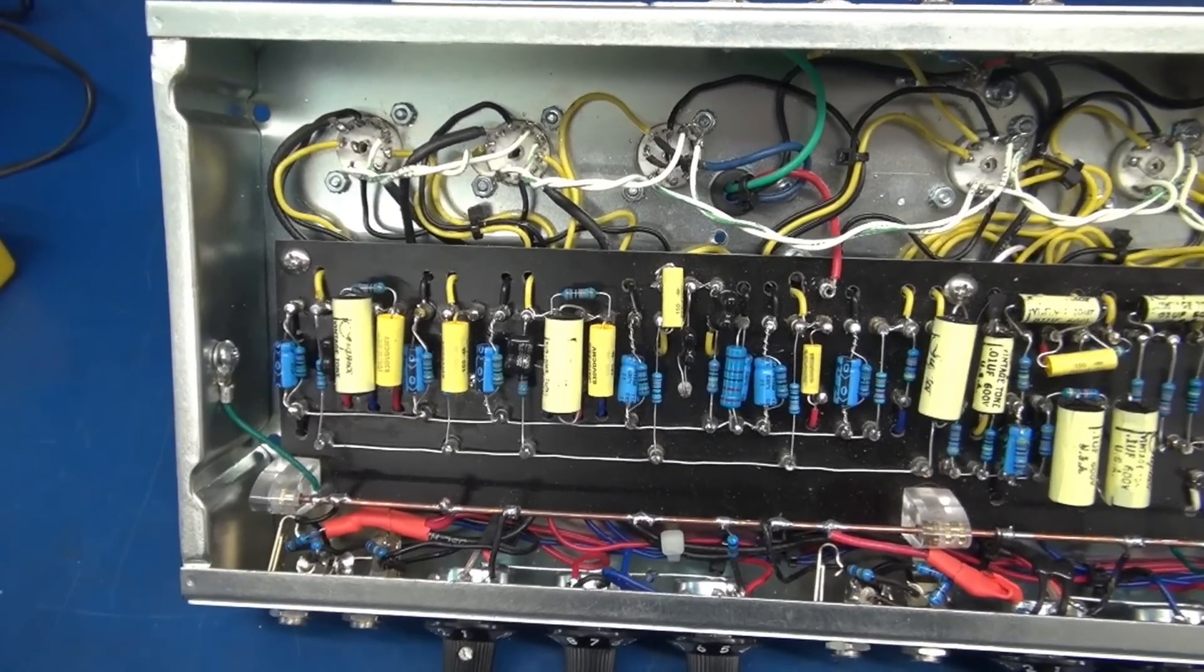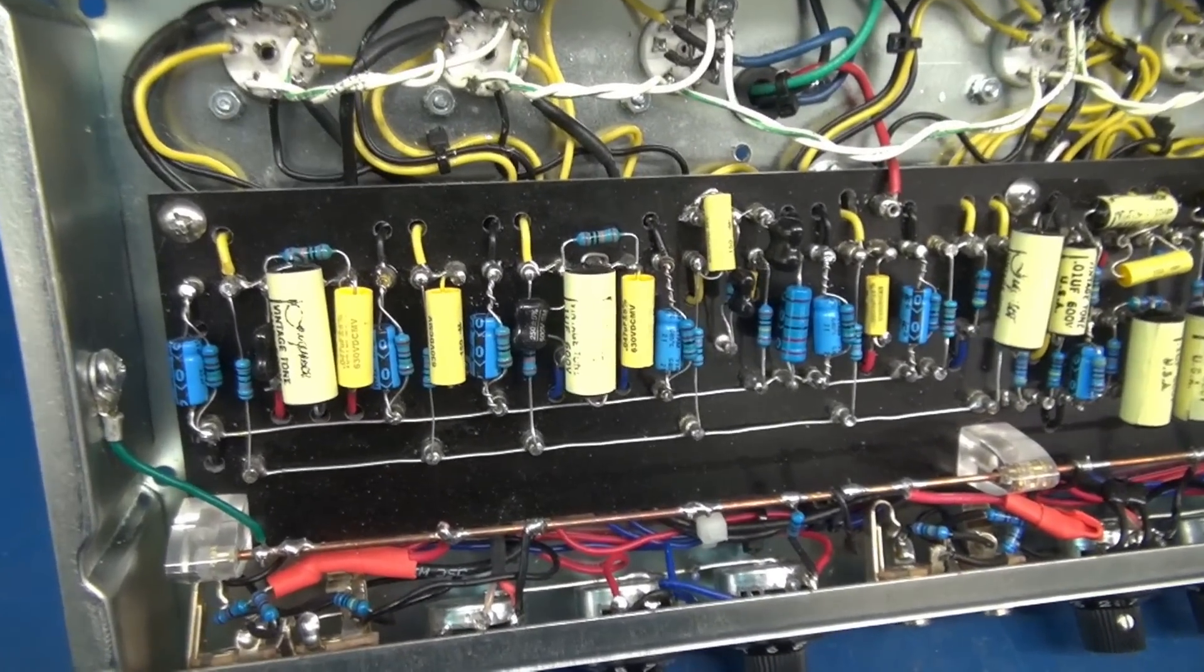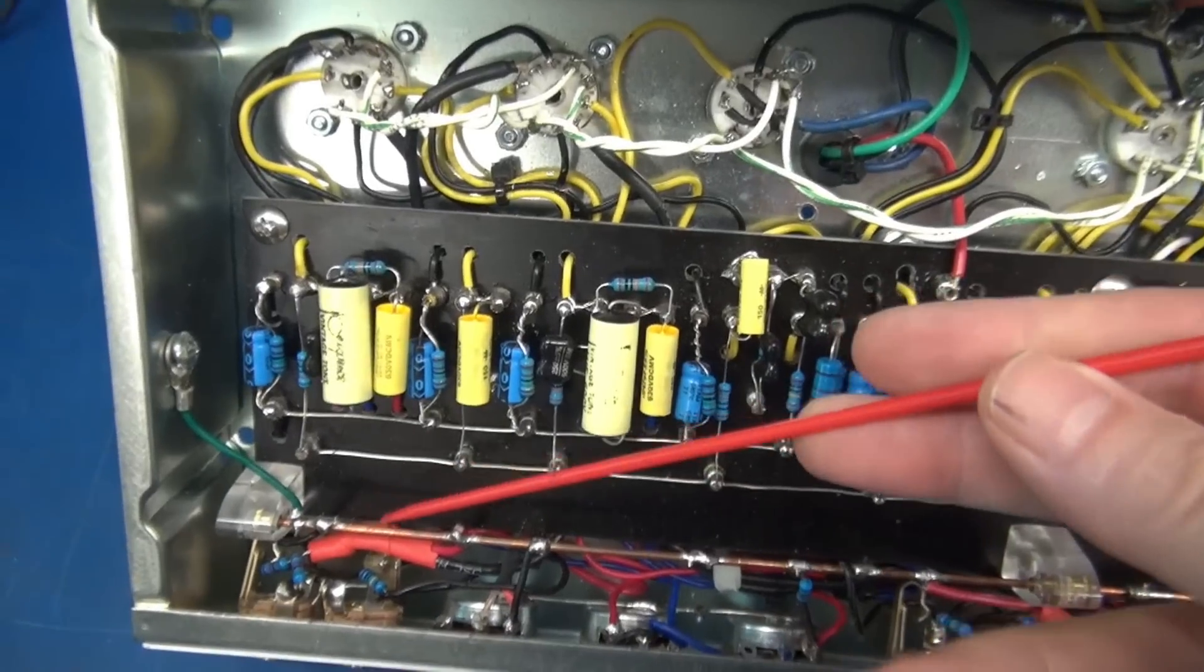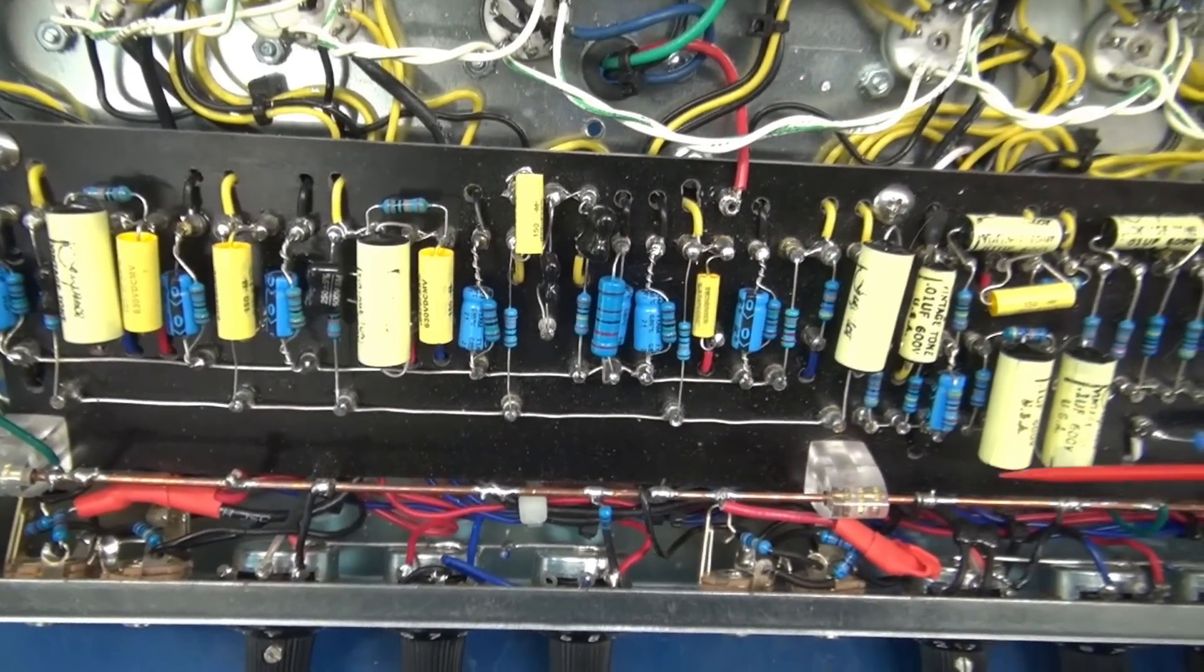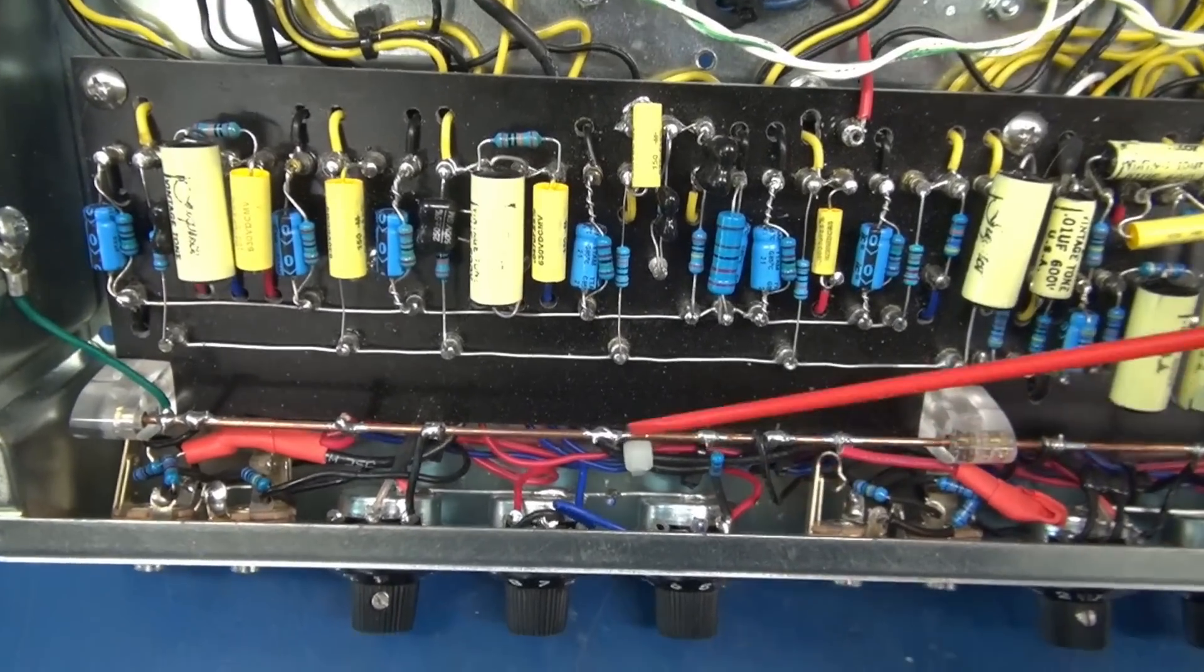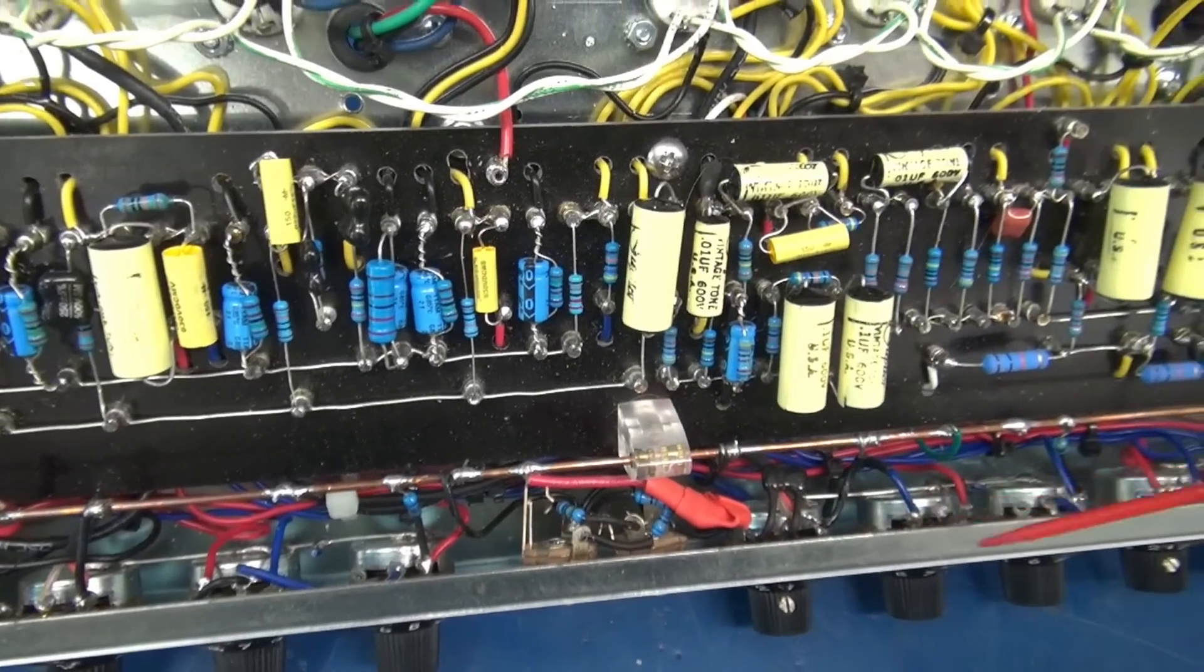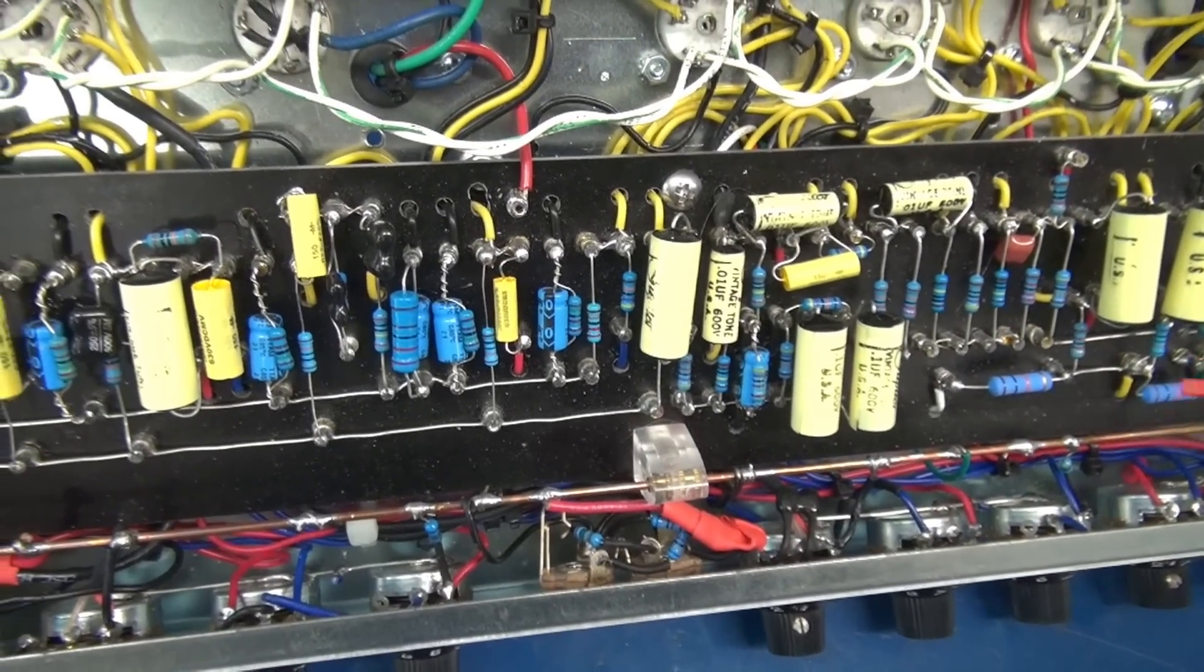Alright, I'll pan the Hoffman turret board. The first thing that I spotted was this ground bus system. Now this was added by the owner. The Hoffman instructions shows the wire off the back of the pots, like you would see on many of these new kit amp builds.